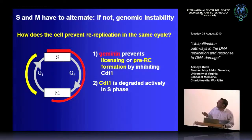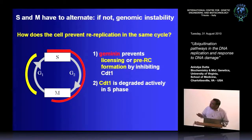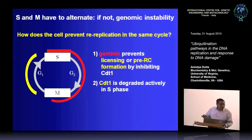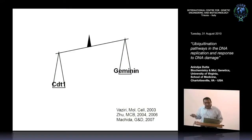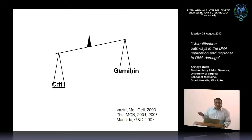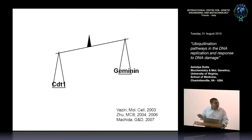Geminin prevents licensing or pre-RC formation by inhibiting CDT1, and that's important. But it also turned out that CDT1 is degraded in the second half of the cell cycle. It's present in the first half to promote licensing, but as soon as the cell enters S phase, CDT1 gets degraded. We proved this by altering the CDT1-Geminin balance — any manipulation that increases CDT1 or decreases Geminin ended up causing re-replication.